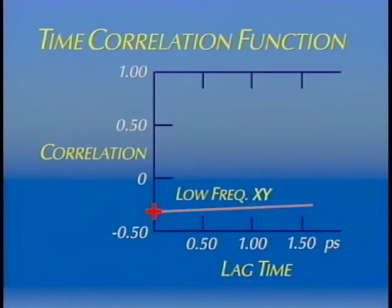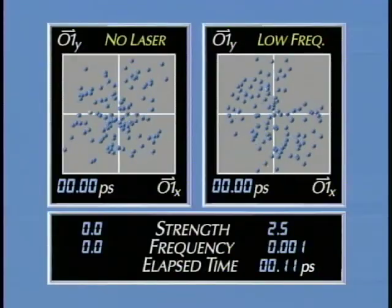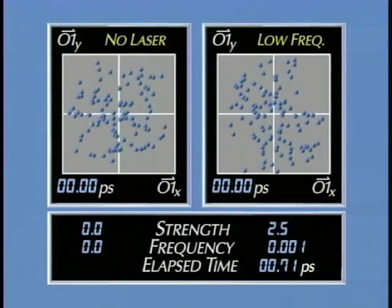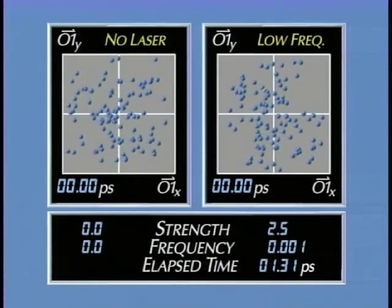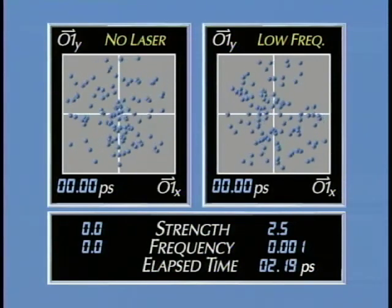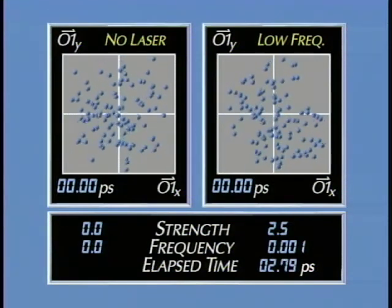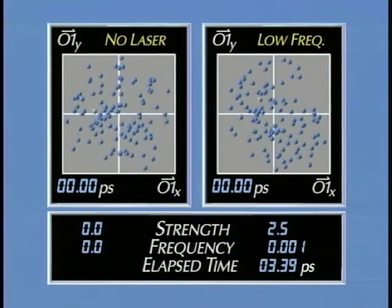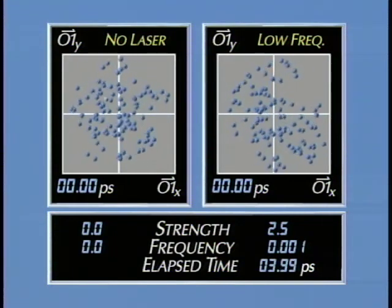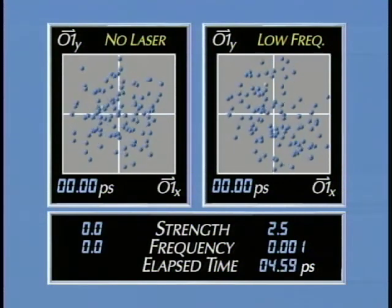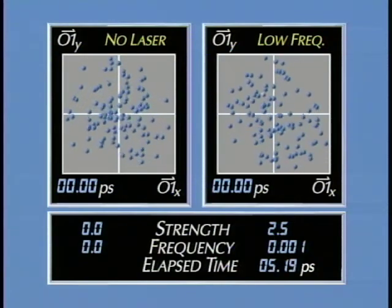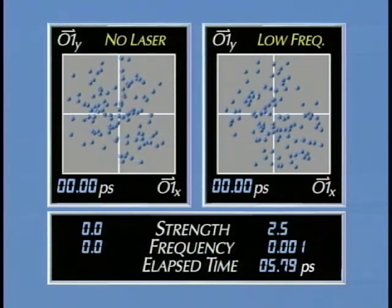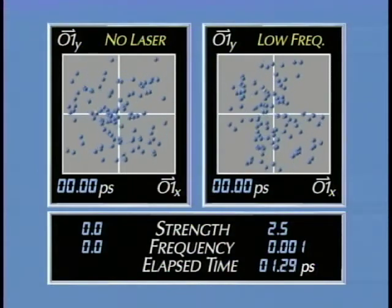The first sequence shows the correlation with lag time equal to zero. Each sequence illustrates ensemble behavior over 600 time steps, or 6 picoseconds. Only random thermal motion is evident in the baseline condition in the left panel. Even in the presence of a laser, the correlation of orientation vector components is much weaker than for the net torque vector. Although this sequence is not as visually dramatic as we saw for net torque, the ensemble correlation is statistically significant.